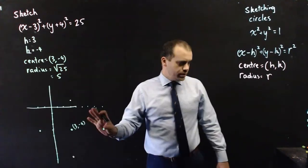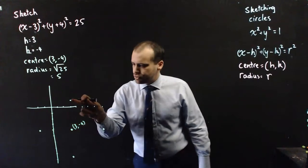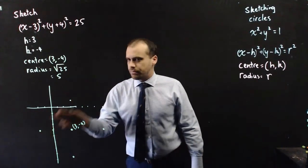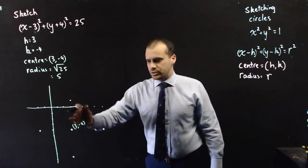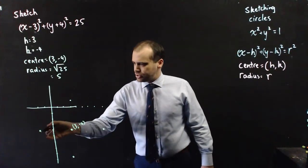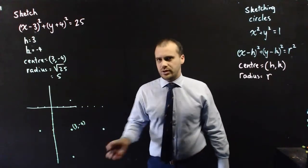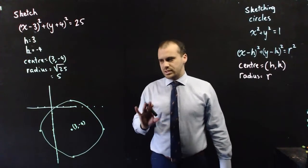All right, we can sketch that really quickly. Now, what I've done here is put the center here, and then drawn these four other points. These are the extreme values here, and I just need to draw a nice little curve around those. That is a terrible-looking circle, but you get the idea.